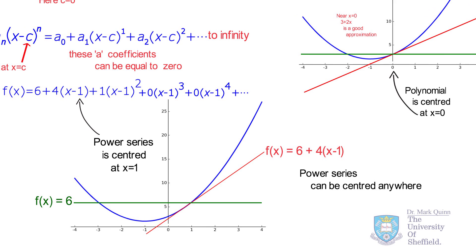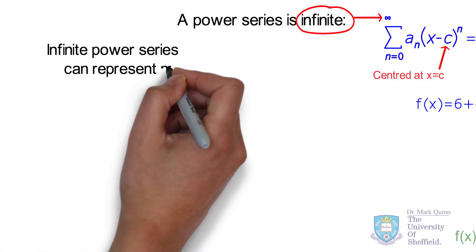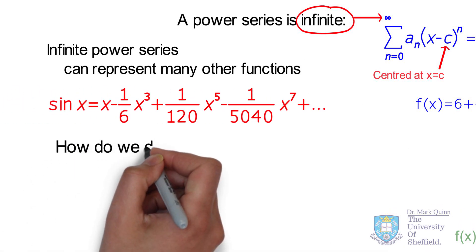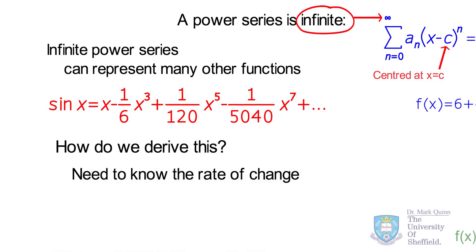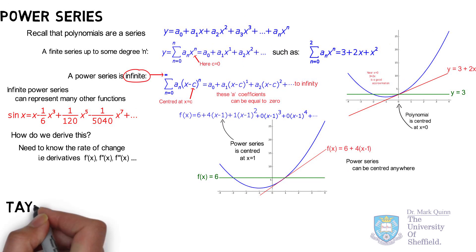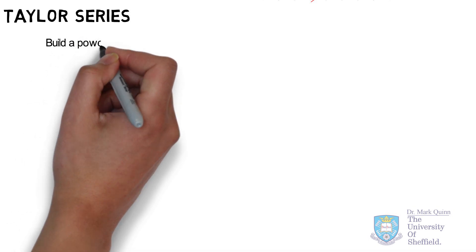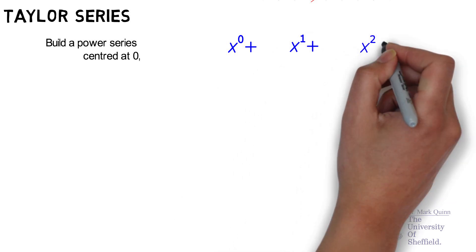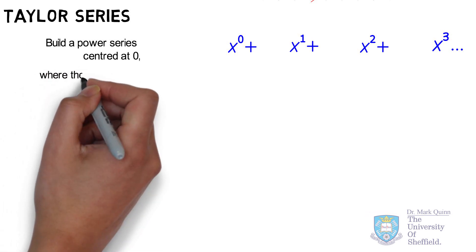This style of approximation is trivial in the case of polynomials since the functions are explicitly defined in x and we already know the powers involved. How can we apply power series functions to more complex functions? To do so we need to know how the function changes around the area of interest — hence we need the derivatives of the function. We can then extrapolate the function around the center as a power series involving derivative orders. This is referred to as a Taylor series.